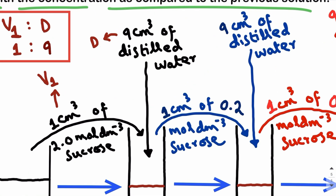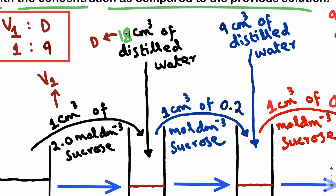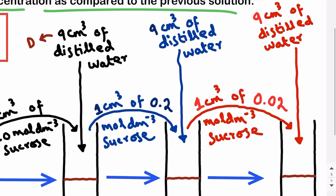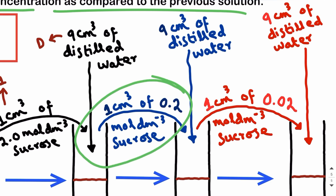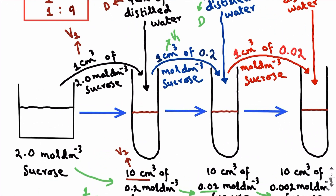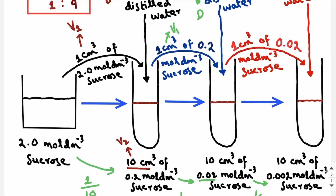If you take 2 cm³ of 2.0 mole per dm³ sucrose, you need to take 18 cm³ of distilled water — the ratio must always be 1:9. To prepare 10 cm³ of 0.02 mole per dm³ sucrose using 0.2 mole per dm³ sucrose, again take the volumes in 1:9 ratio: 1 cm³ of the 0.2 mole per dm³ stock and 9 cm³ of distilled water. If you take 2 cm³, this should be 18 cm³.